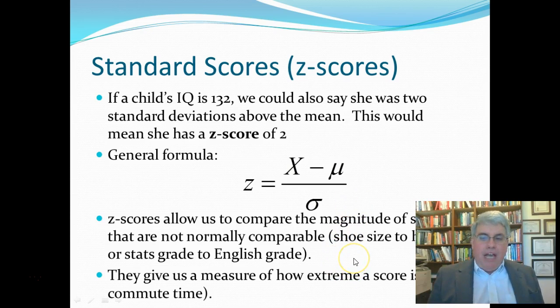Now, the nice thing about Z-scores is that they allow us to compare the magnitude of scores that are not normally comparable. For example, the shoe size to height. If we have somebody that has a shoe size of 15, who's 6'5, can we tell if that person has big feet for their height? No, it's really difficult.